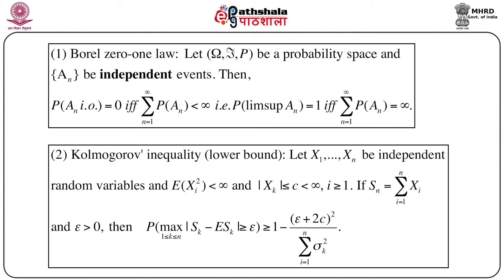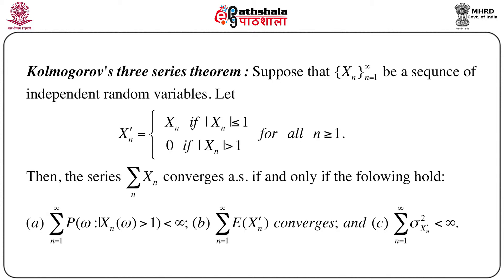The second supporting result is Kolmogorov's inequality, and here we use only the lower bound. This states: if x_1, x_2, ..., x_n are independent random variables with the expectation of x_i squared less than infinity, and additionally the modulus of x_k is less than or equal to c which is finite — so x_k is a bounded random variable — then defining S_n as the summation of x_i from i equals 1 to n, for every epsilon greater than 0, the probability of the maximum over k of the modulus of S_k minus the expectation of S_k being greater than or equal to epsilon is bounded below by 1 minus (epsilon plus 2c) squared divided by the summation of sigma_k squared from k equals 1 to n.